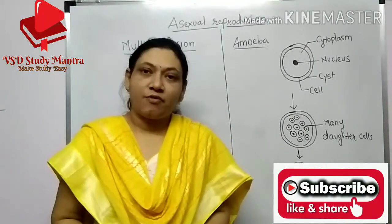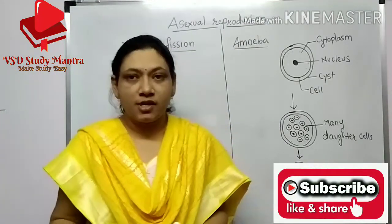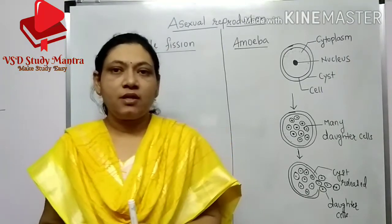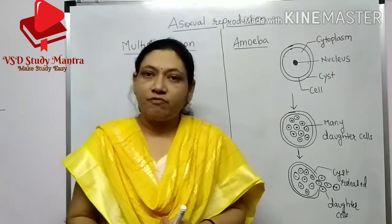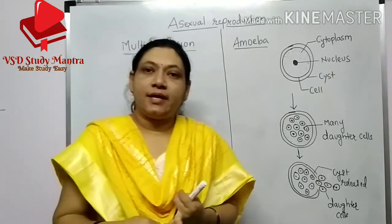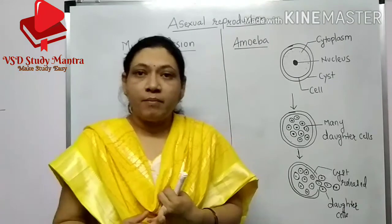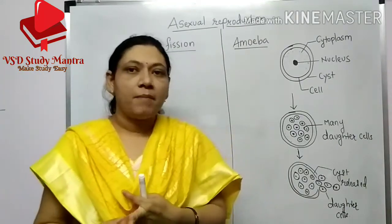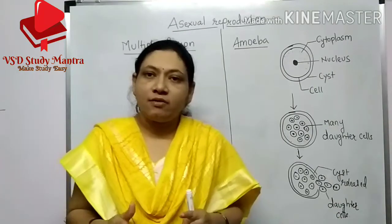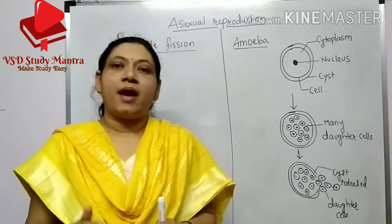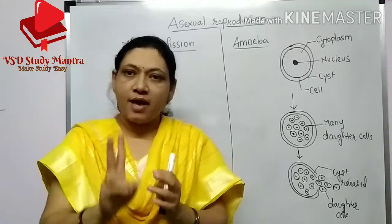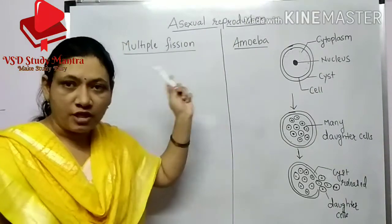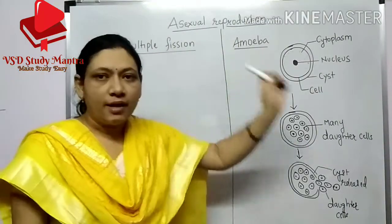Hello students, we are studying asexual reproduction. Up till now, we have finished binary fission — simple binary fission in amoeba, then longitudinal binary fission in euglena, and transverse binary fission in paramecium. So our binary fission is completed. Binary means two divisions; bi means two. Now we are going to study multiple fission in asexual reproduction.